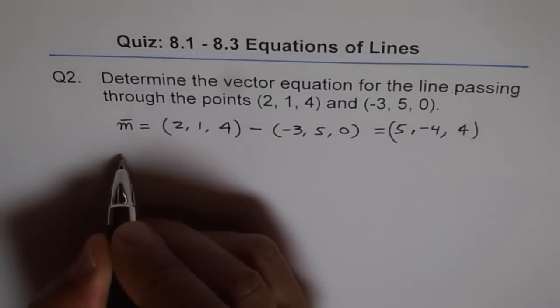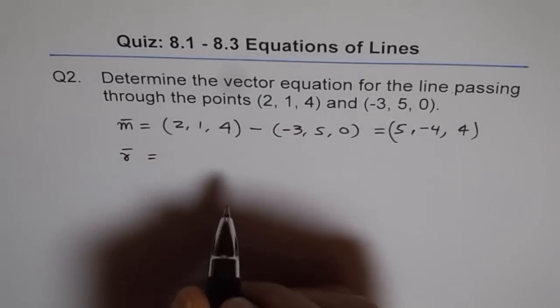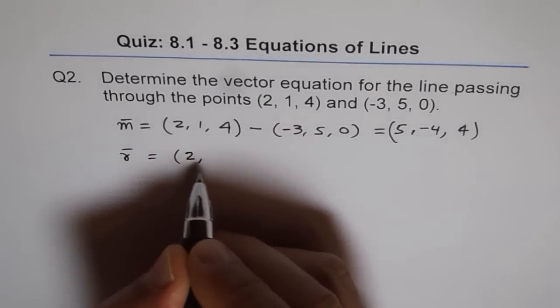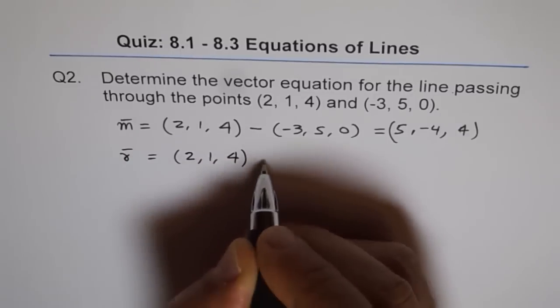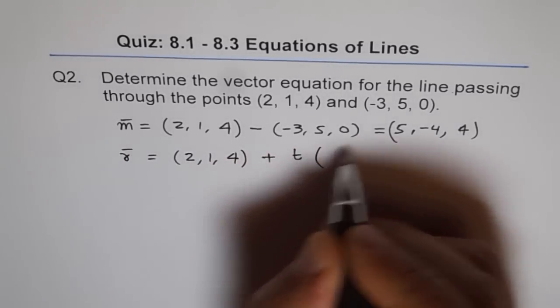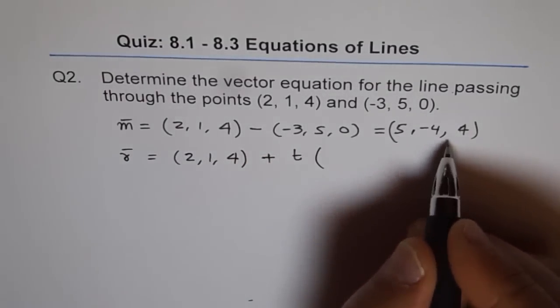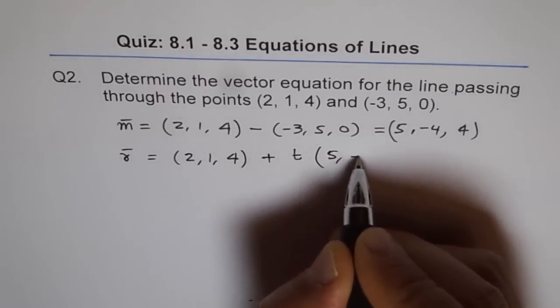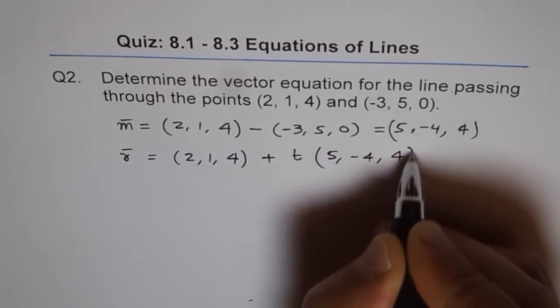So we can use a point and say r is equal to (2, 1, 4) plus t times any scalar multiple of this direction vector, (5, -4, 4).